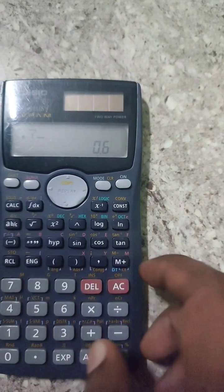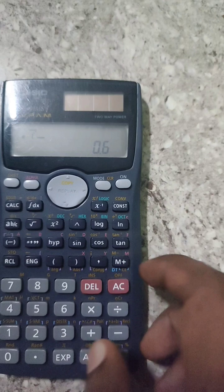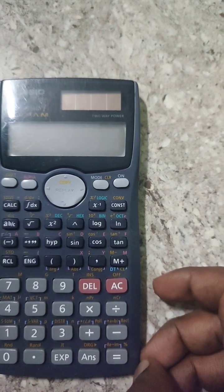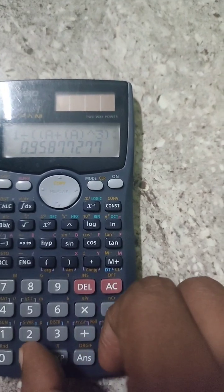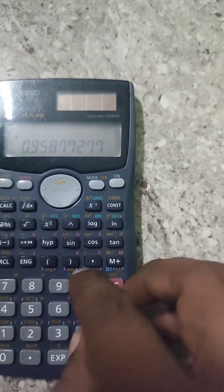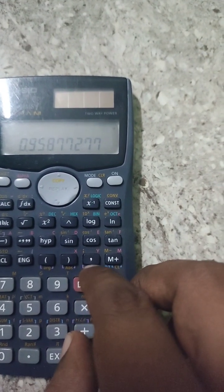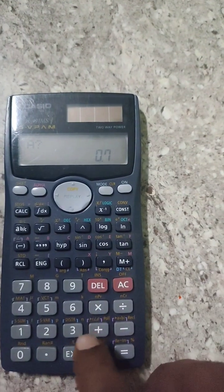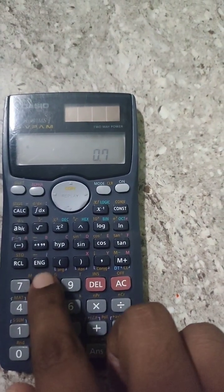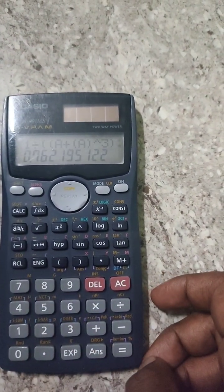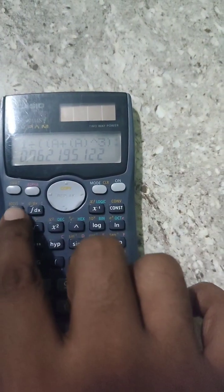Next, you press equal to. Give the value as 0.7. Then you press equal to. You will get 0.95. For 0.8, you give equal to. You will get 0.76.